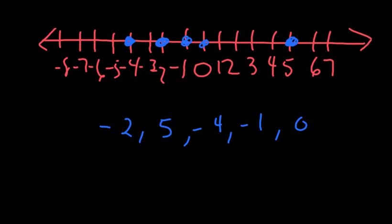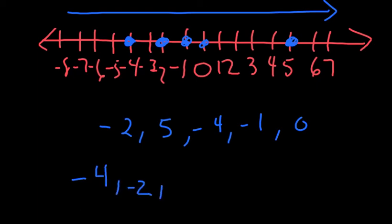Now you're going to go back and write them in order from left to right because that would be smallest to greatest. So, smallest to greatest: negative 4, negative 2, negative 1, 0, 5. I'm just writing them in the order that they appear on the number line.